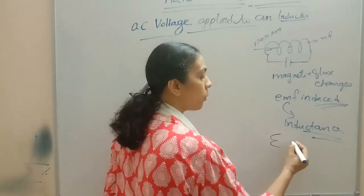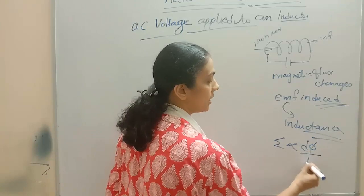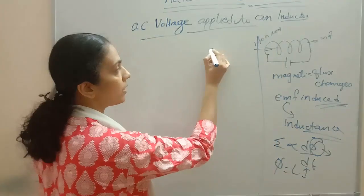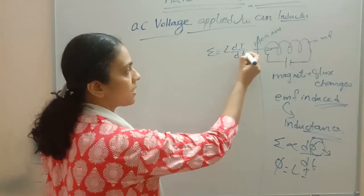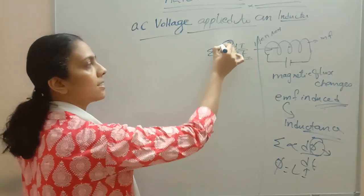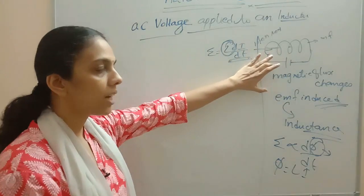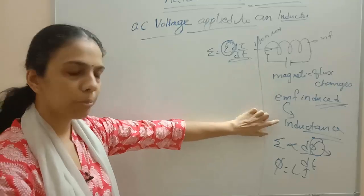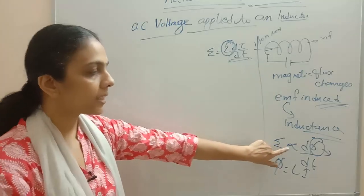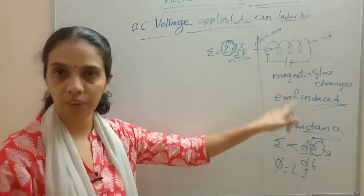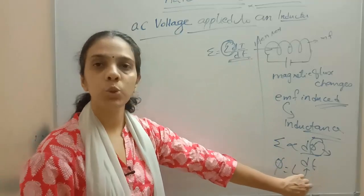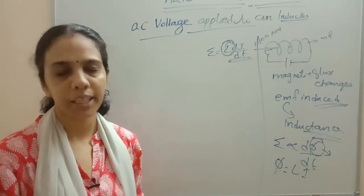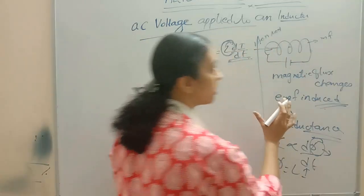The EMF induced in the circuit is proportional to dφ/dt. In the case of an inductor, φ is equal to L times i. So EMF e equals L times di/dt. L is called inductance. EMF is directly proportional to the rate of change of flux; flux φ equals L·i, where L is the inductance and i is the current flowing through the circuit. So this is a short introduction about the inductor.